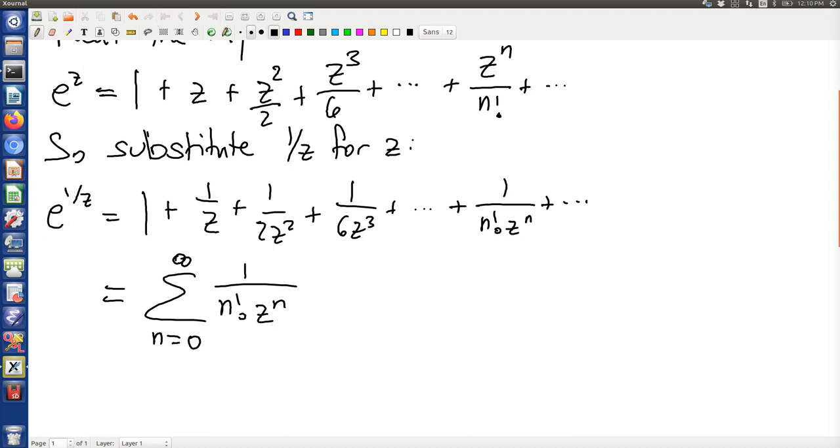making it very much like the Taylor series. Or we could write it out in a way that emphasizes the Laurent series nature of this. We could write it out with an absolute value of n factorial, and with a z to the n in the numerator.